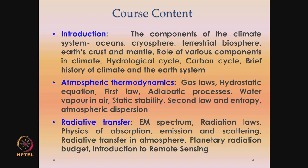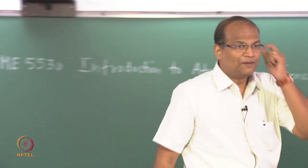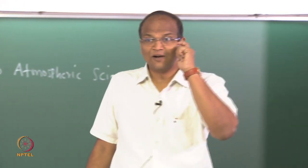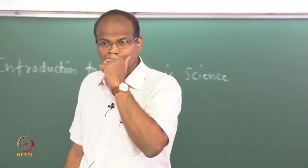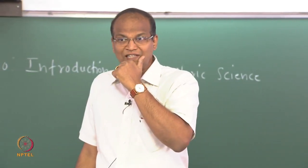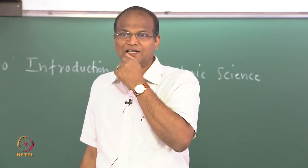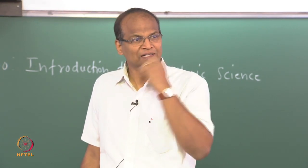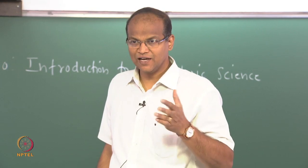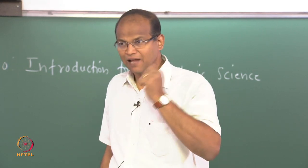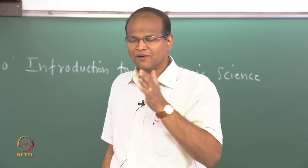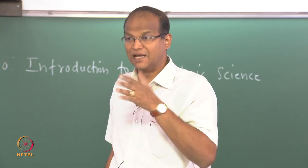Then radiative transfer in the atmosphere — we look at the electromagnetic spectrum, radiation laws, and the physics of absorption, emission, and scattering. This is very important because the climate of the earth is controlled by the radiation balance, whereas the weather is mostly controlled by winds and other things. The climate is governed by the radiation balance.